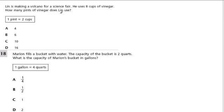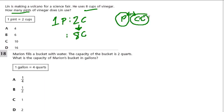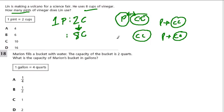Lynn is making a volcano for a science fair and uses eight cups of vinegar. How many pints is that? We have one pint to two cups, and now we have eight cups. If we had two cups and multiply by four, we have eight cups — four groups of two cups. Every group of two cups corresponds to one pint. So with eight cups, which is four groups, we have four pints.